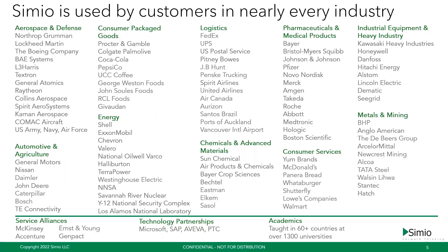Looking at some key customers — Simeo is very strong in aerospace and defense: the Lockheed Martins, Northrop Grummans of the world. All space vehicles going to space — like the new James Webb Space Telescope — were built at a facility using Simeo to schedule daily schedules 52 weeks in advance, scheduling about 400,000 to 500,000 tasks per day. The largest consumer packaged goods companies like Procter & Gamble, Colgate, and nuclear fuel manufacturing are also key customers.